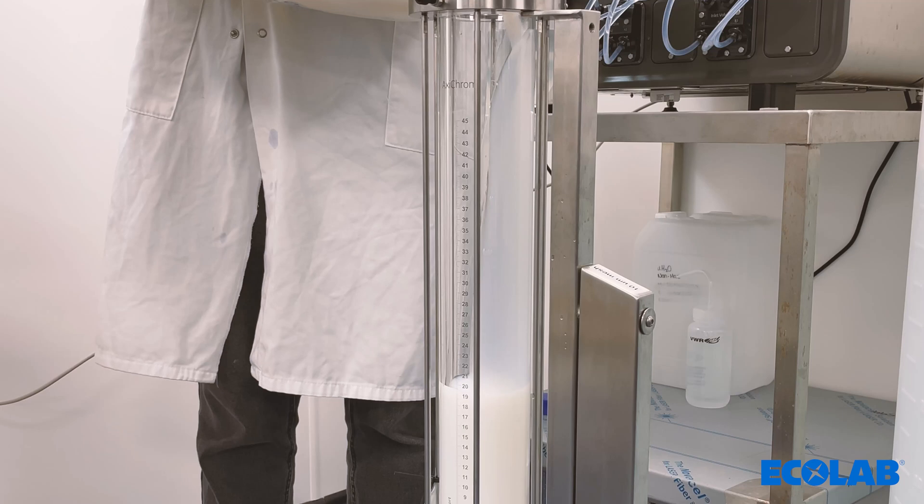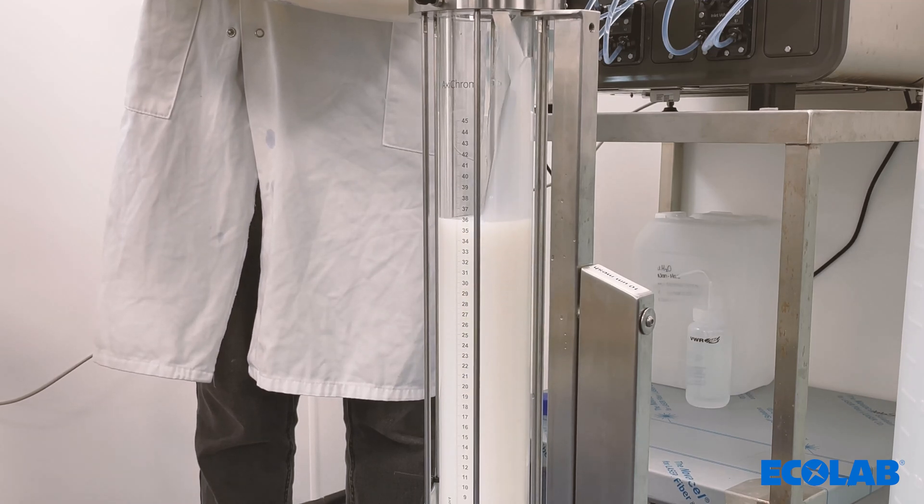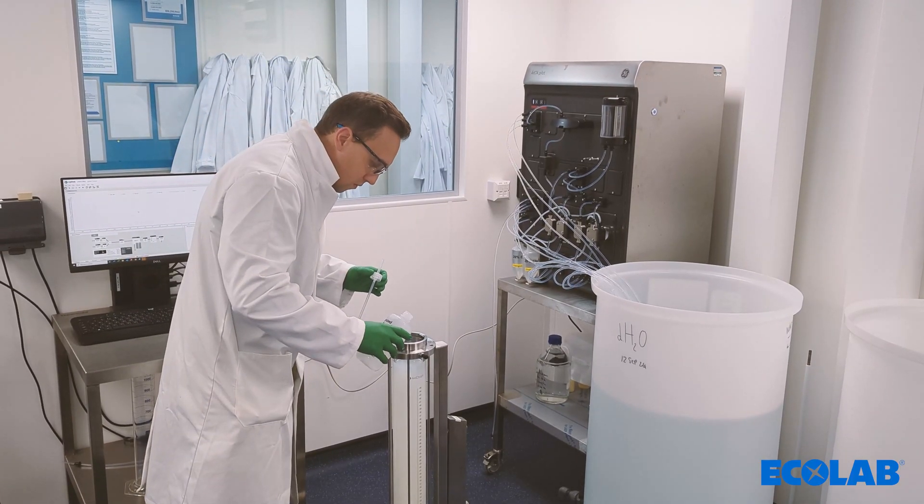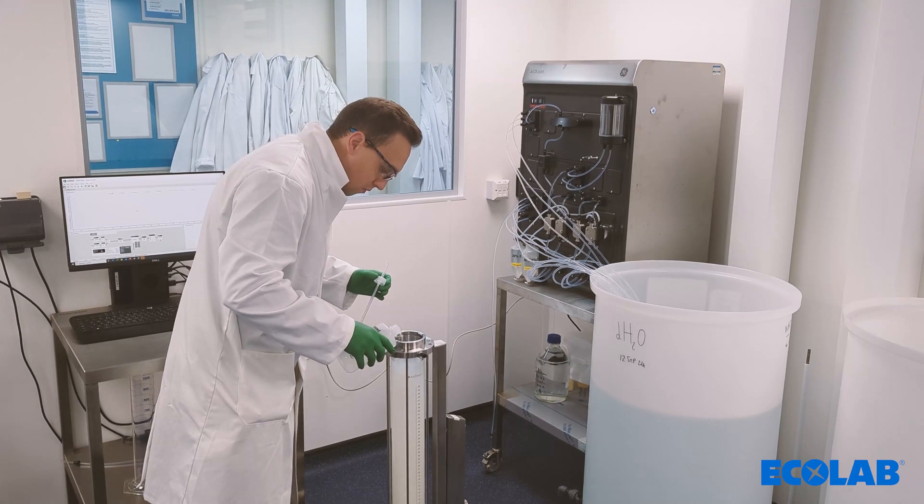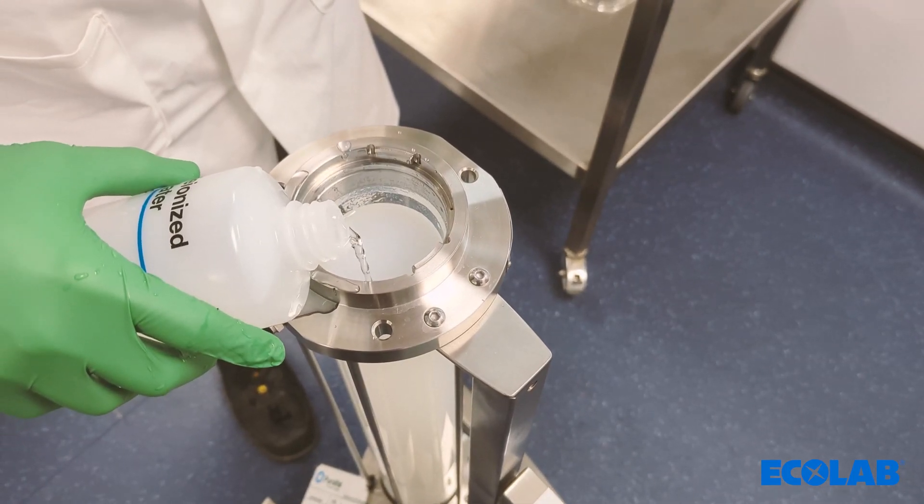The calculated volume of resin can now be added to the column and if needed, top up the liquid level to the top of the column using the packing buffer. Perform a buffer exchange from the storage solution into the packing buffer by either washing the column with a low flow or decanting the liquid level after settling the resin.